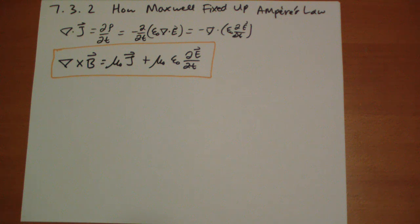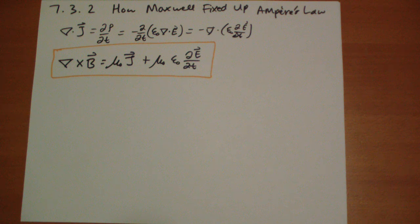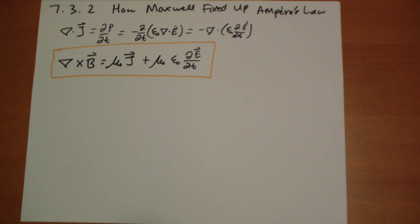Now Maxwell had a different reason to introduce this term. He was thinking in terms of ether and stuff like that. It was a great theoretical crutch to get us to where we are, but it turns out that the ether, as we can find out through experiments, indeed doesn't exist.